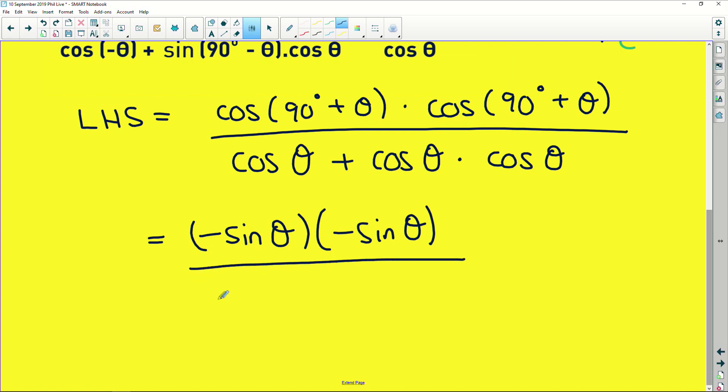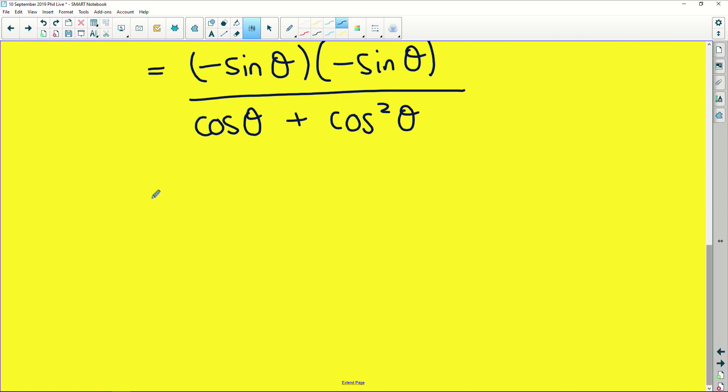In our denominator, cos(θ) stays the same because we can't add it to anything right now. And we get cos²(θ). So now we're getting a little bit closer to the right-hand side. Numerator multiplies out to give us just sin²(θ). And we get the same denominator that we've been working with.